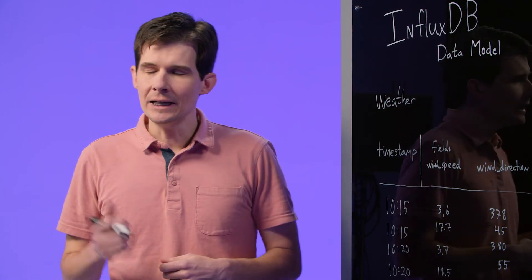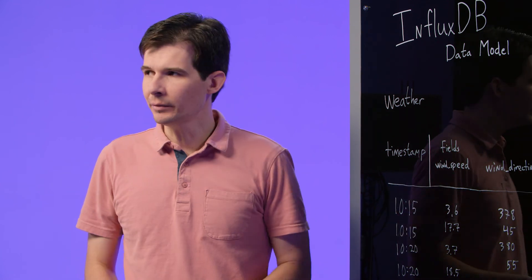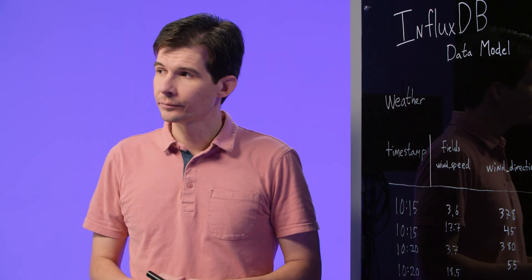Fields have name and type. So this field name is wind speed, and its type is floating point. This field name is wind direction, and its type is integer.